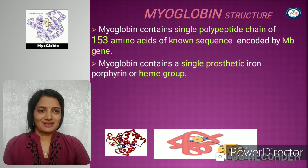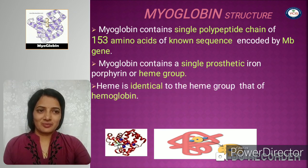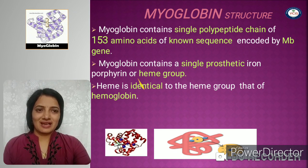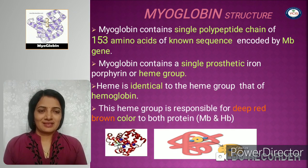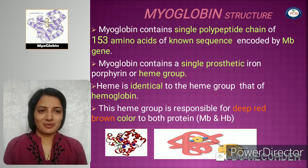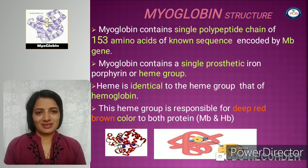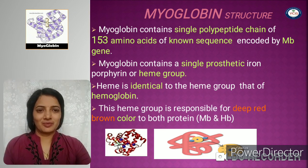Myoglobin contains a single prosthetic group — the heme group — which is identical to that of hemoglobin. This heme group is responsible for the red-brown color of both hemoglobin and myoglobin.